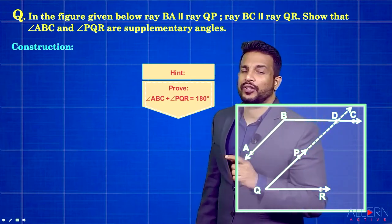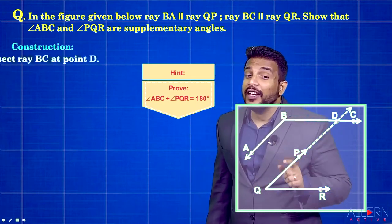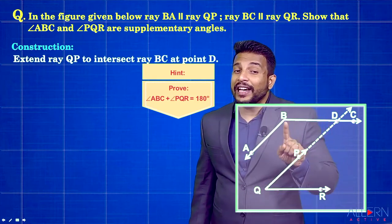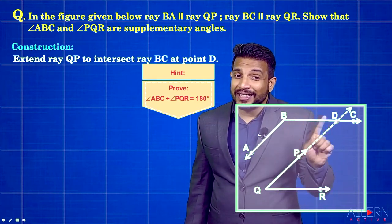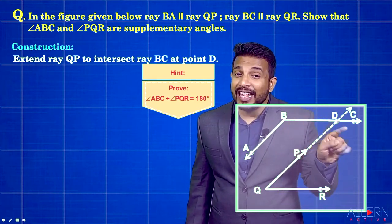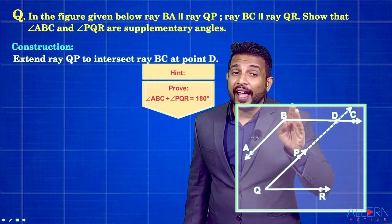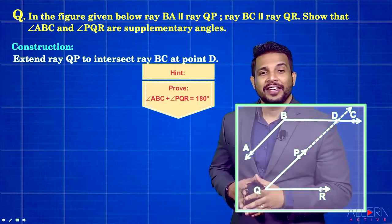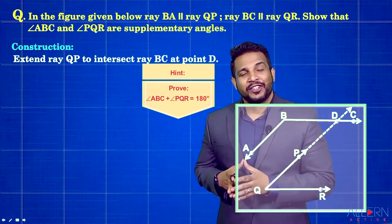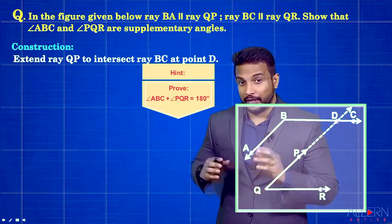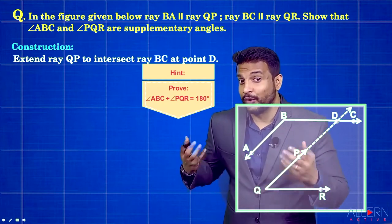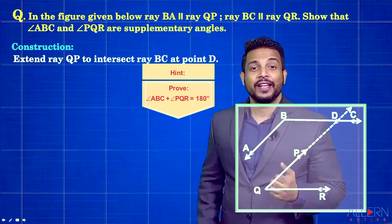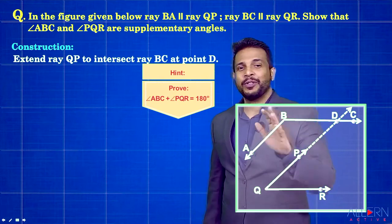The construction we have done is: extend ray QP to intersect ray BC at point D, such that B, D, C are collinear. That's the construction — we needed a transversal for the parallel lines.